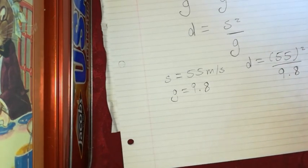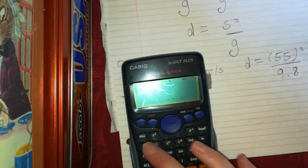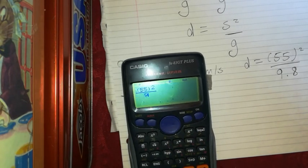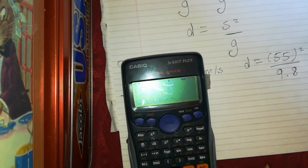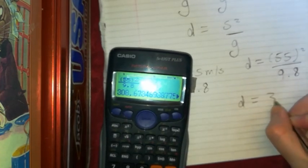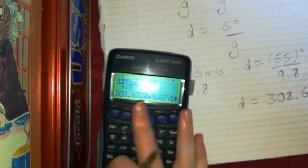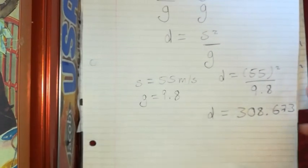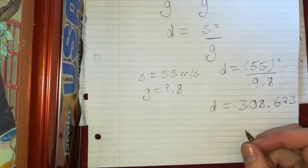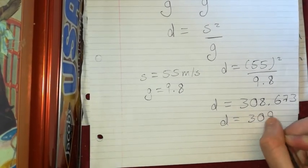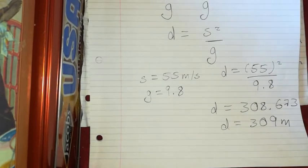So it's going to be 55 squared over 9.8. So I get a depth of 308.673, but it asks correct to the nearest meter. So my depth is going to be 309 meters. And that is our answer. Thanks.